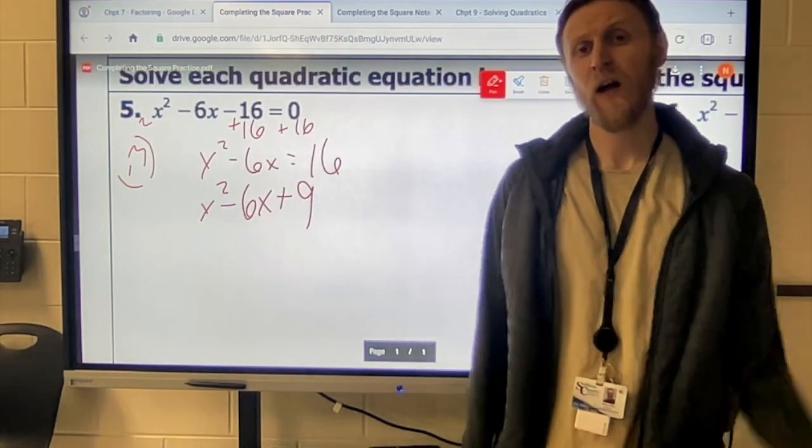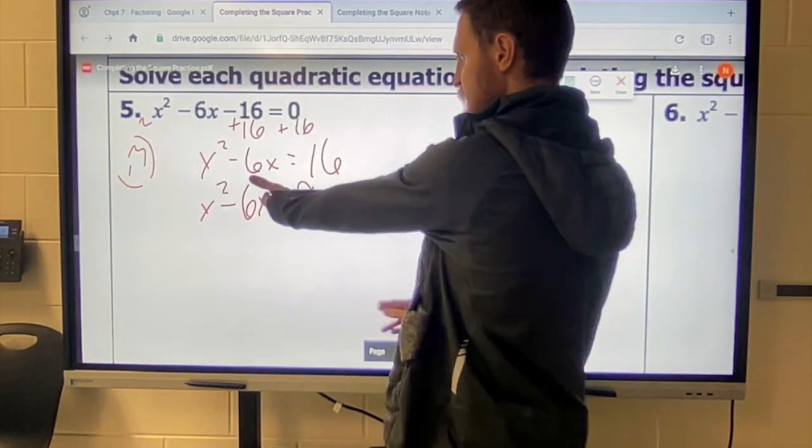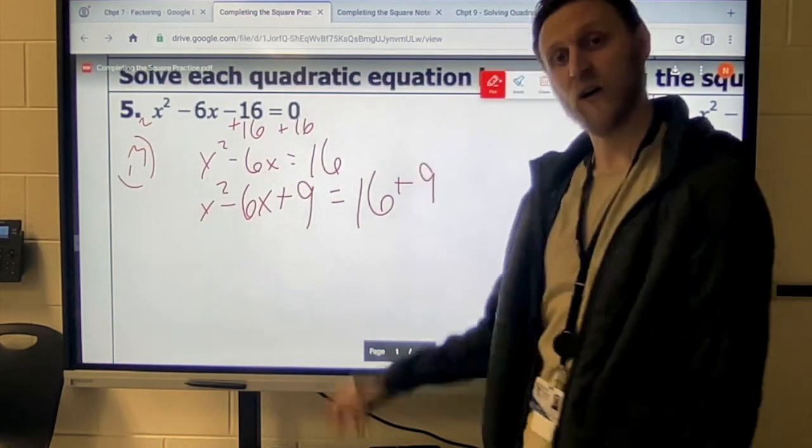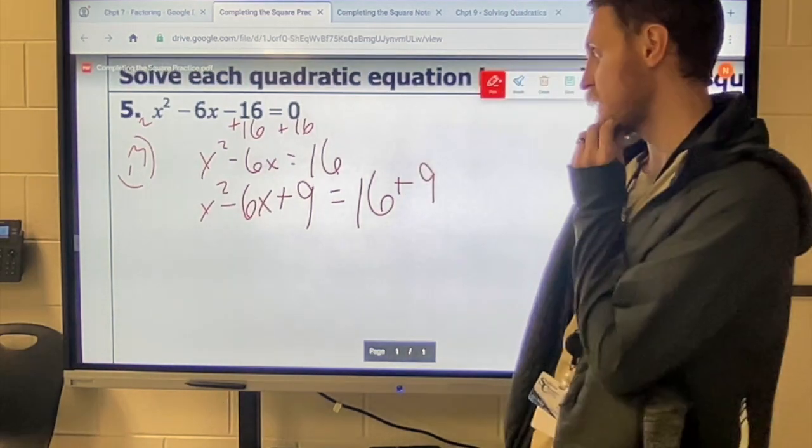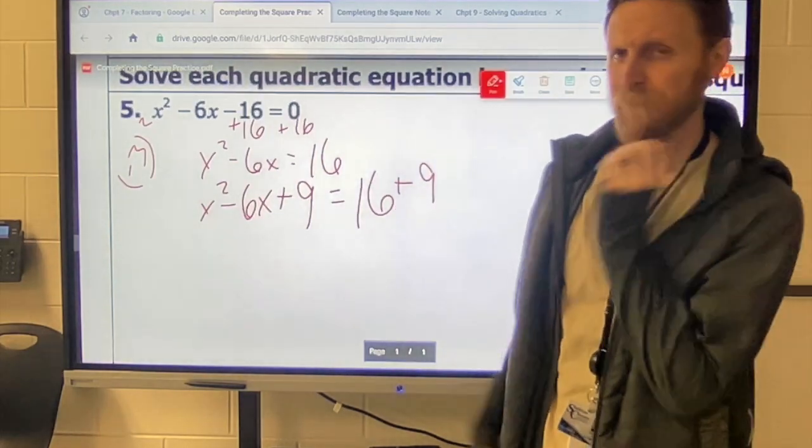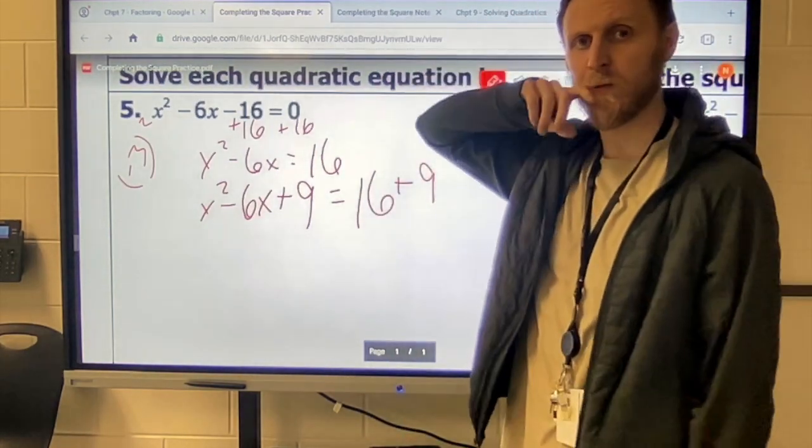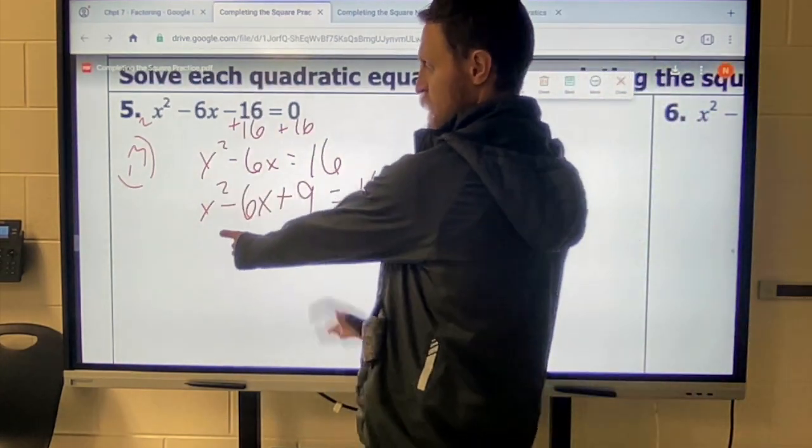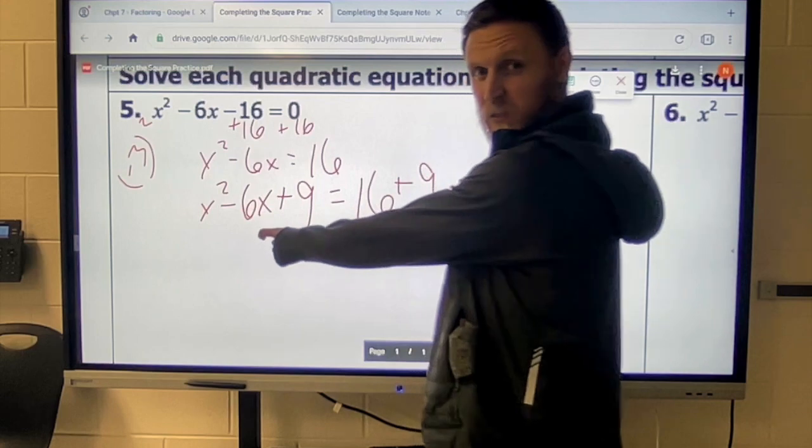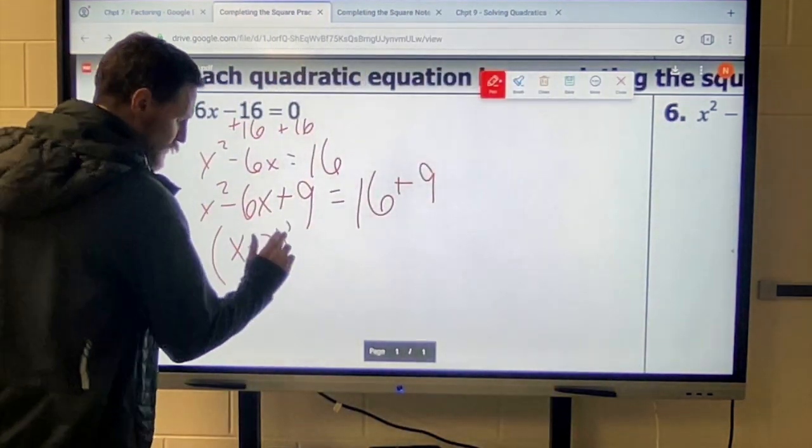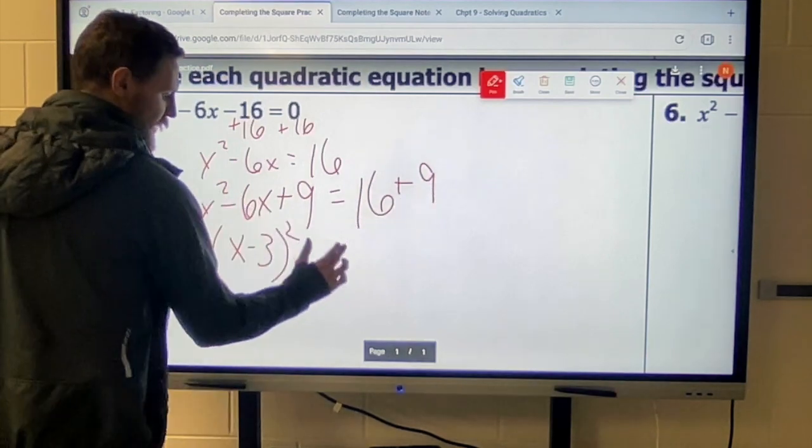So I'm going to do the plus 9. I just stick that plus 9 right there. But if I'm going to stick the plus 9 on this side of the equal sign, I also need to stick that plus 9 on the other side of the equal sign as well. So on the other side, I'll have the 16 plus the 9. And then from here, we're doing the same thing that we did on the problem we just finished, where this would be an x minus 3, x minus 3, which is just x minus 3 quantity squared. 16 plus 9 is 25.